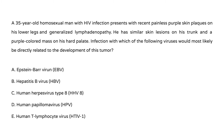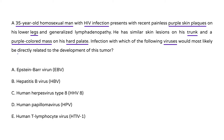Let's take a look at a clinical vignette. A 35-year-old homosexual man with HIV infection presents with recent painless purple skin plaques on his lower legs and generalized lymphadenopathy. He has similar skin lesions on his trunk and a purple colored mass on his hard palate. Infection with which of the following viruses would most likely be directly related to the development of this tumor? As discussed earlier, it's human herpes virus type 8 — the answer is C.